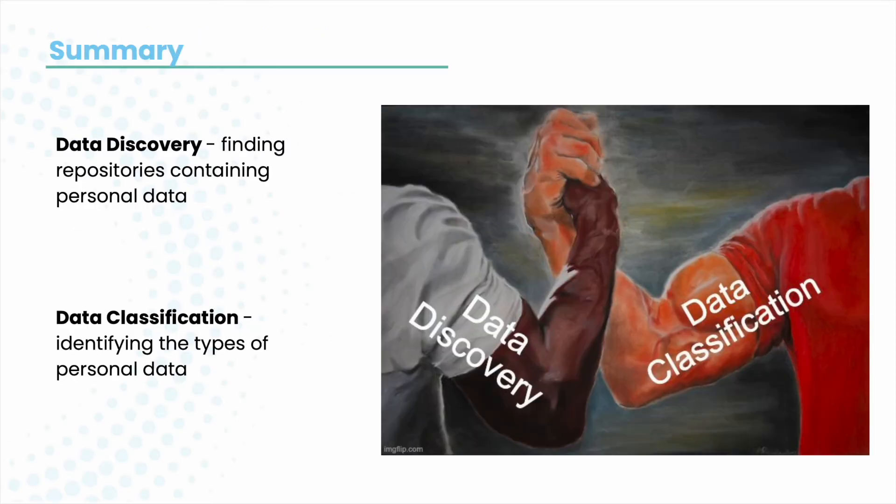Let's sum it up. Data discovery and classification go hand in hand. Data discovery is the first step — it finds repositories containing personal data in your corporate network. Classification continues the process: it helps identify the types of data and informs you how to treat and protect it.